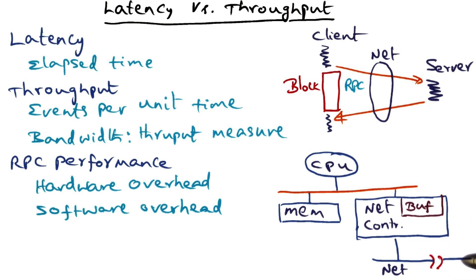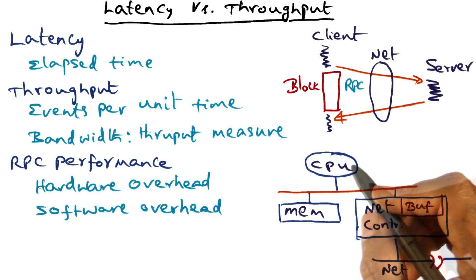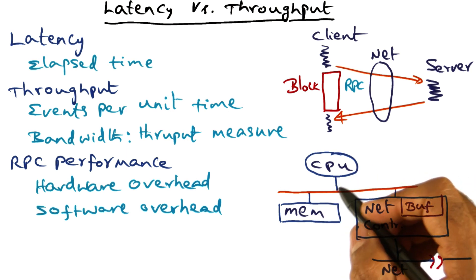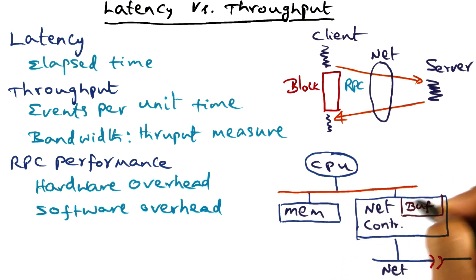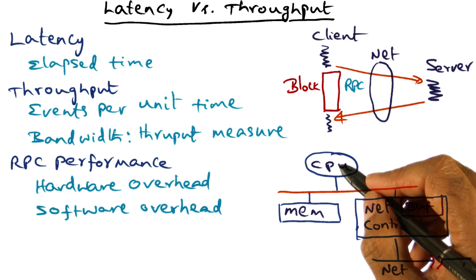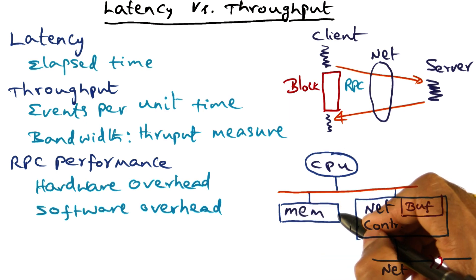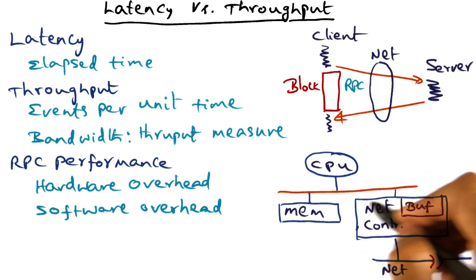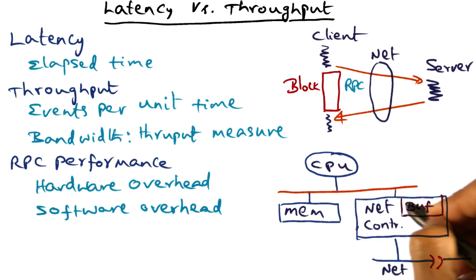This is where the bandwidth that you have connecting your node to the network comes into play. But there are also other types of network controllers where the CPU may actually be involved in the data movement. In that case, the CPU does program IO to move the bits from the memory into the buffer of the network controller, from which the network controller will then put it out on the network. But modern network controllers tend to be built using DMA technique, meaning that once the CPU tells the network controller where in memory the message is to be sent on the wire, the network controller does the rest in terms of moving the bits into its internal buffer and then from the buffer putting it out on the network.